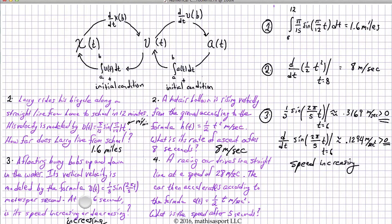Okay, last question. We've got a racing car. It's going down a straight road at 28 meters per second, which is probably about, I don't know, 60 miles an hour. And then the car accelerates according to some formula, a of t is one half t meters per second squared. So, how fast is the car going after five seconds?